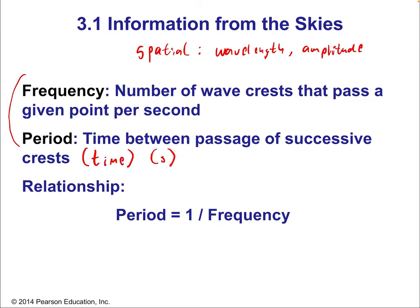If you're counting how many waves pass per second, say you counted 40 waves in one minute — then you'd have 40 waves over 60 seconds, giving you two-thirds as your frequency. So two-thirds of a wave per second means a little less than one wave per second arrives. If exactly one wave arrives per second, you'd have a frequency of one and a period of one, because it took exactly one second for the wave to repeat itself.